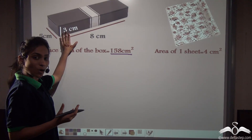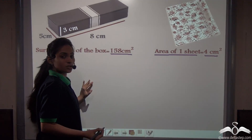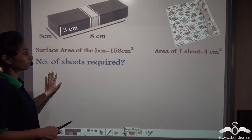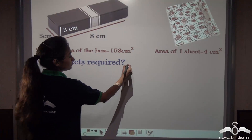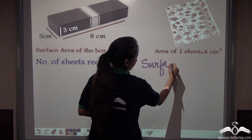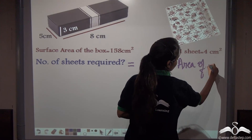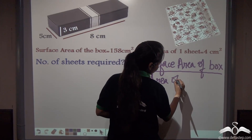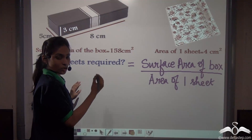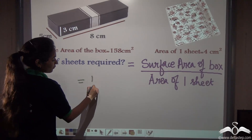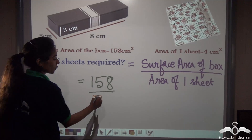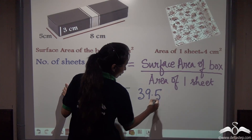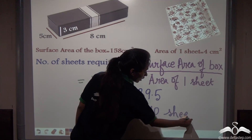What I had to do? I had to cover this box. I found out that the area of one sheet is 4 centimetre square. So how many sheets would I require to cover this box? The number of sheets required is: surface area of the box divided by area of one sheet. That is 158 divided by 4, which gives us 39.5 — so we will require about 40 sheets of paper to cover this pen box.